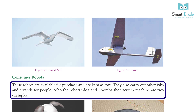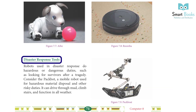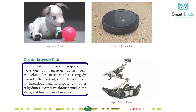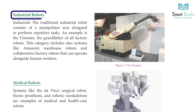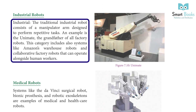Consumer Robots: These robots are available for purchase and are used as toys or to carry out jobs and assist people. Aibo the robotic dog and Roomba the vacuum cleaner are two examples. Disaster Response Robots: These are used for hazardous or dangerous duties, such as looking for survivors after a tragedy. Consider the Packbot — a mobile robot used for hazardous materials disposal and other risky duties. It can drive through mud, climb stairs, and function in all weather.